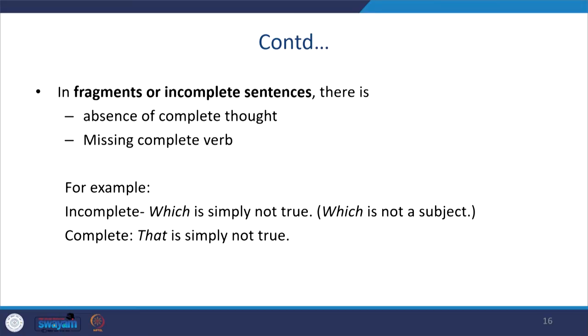Sentences can have boundaries, or sometimes they have a run-on. For example, you say something in the first sentence but half of what you want to complete runs on into the second one. In fragments and incomplete sentences there is absence of a complete thought. Sometimes you miss complete verbs — for example, 'which is simply not true' cannot stand as a sentence. You can substitute 'which' with 'this' — 'this is simply not true' — then the sentence has completion.